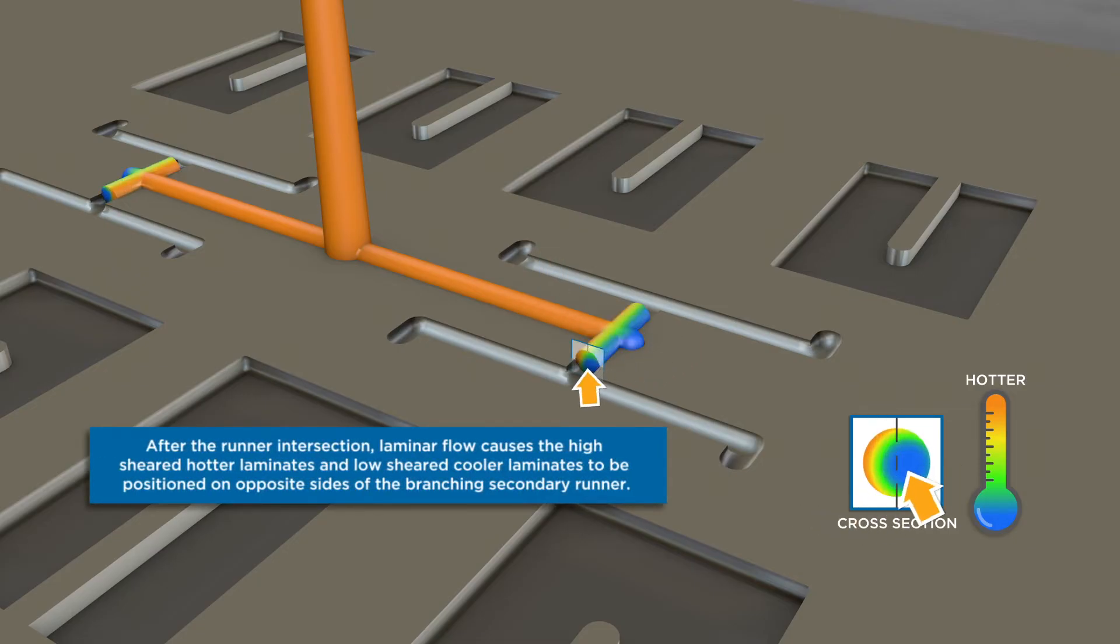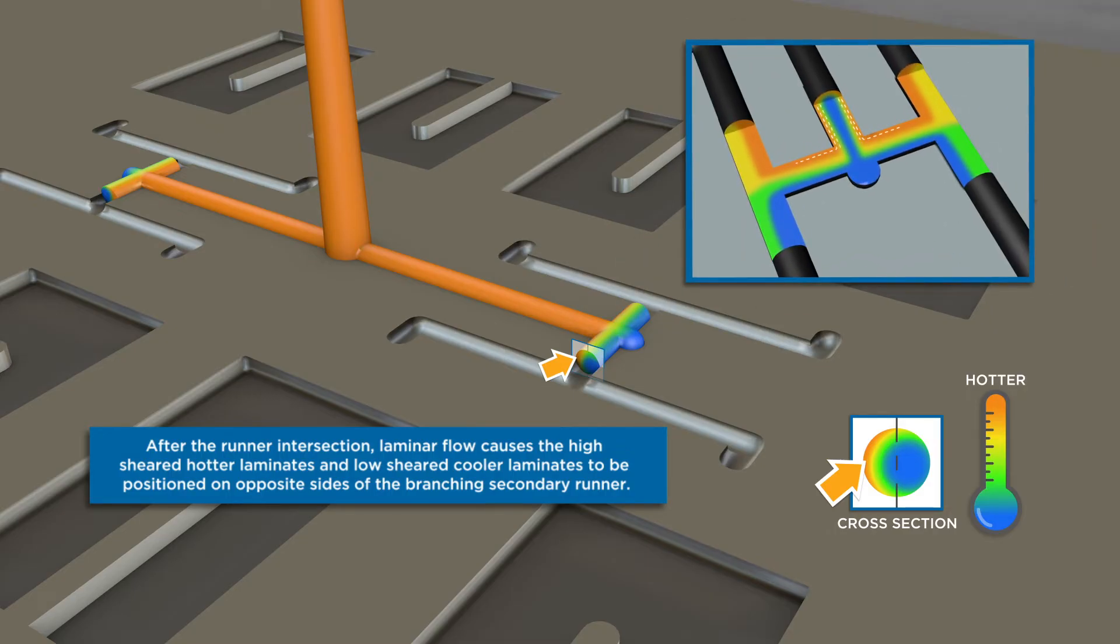Because plastic flow is a laminar flowing material, as the plastic reaches an intersection in a runner and splits, the high sheared and low sheared material laminates will also split.